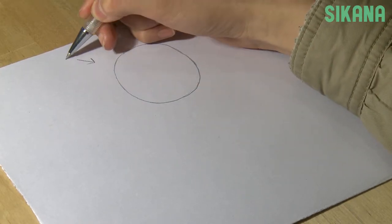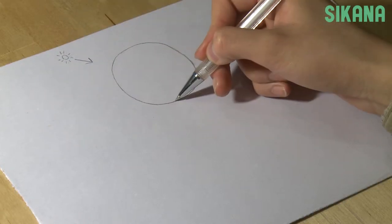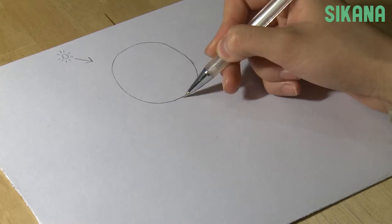We're going to imagine that the light source is positioned in the top left-hand corner, so we know the shadow will appear at the bottom right-hand side of the ball.